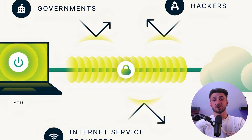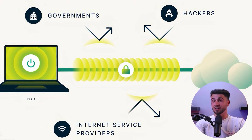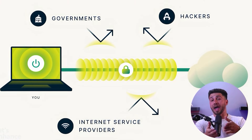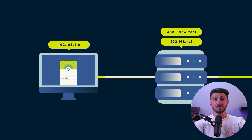When you connect to the internet through a VPN, your device first establishes a secure and encrypted connection to the VPN server. This connection is known as a VPN tunnel, and it protects your online activity from third-party observations, such as your internet service provider, advertisers, or hackers. Once the VPN tunnel is established, your device's internet traffic is routed through the VPN server, which acts as an intermediary between your device and the internet.